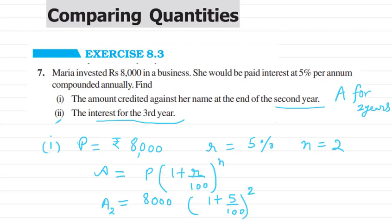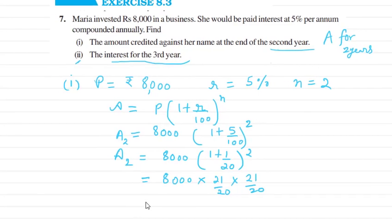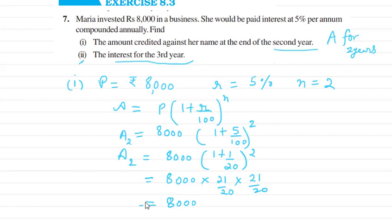In place of R we write 5 and 100, and n is 2. Now simplifying: 5/100 is 1/20, so we get (21/20)². The 8,000 and the 20² simplify — cancelling zeros, 8000 divided by 400 gives 20, then 20 × 441 gives us 8,820 rupees, which will be credited at the end of the second year.